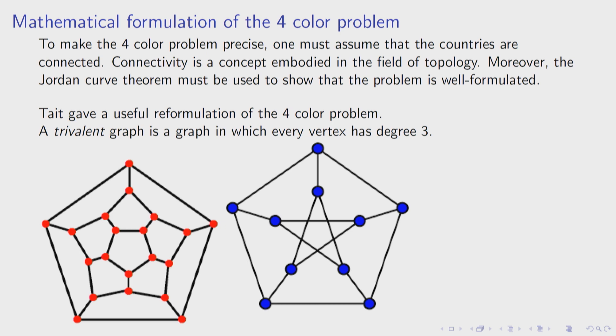If I have a map, I can deform it a little bit, and as long as I don't change the connectivity of the countries or counties, I can make lines straight and still require the same number of colors. So the number of colorings of a map is a topological invariant — it's invariant under deformation. You might have to use more paint in one than another, but just the number of colors is invariant.